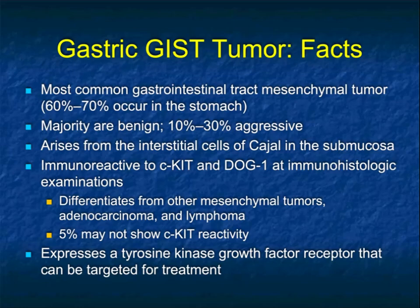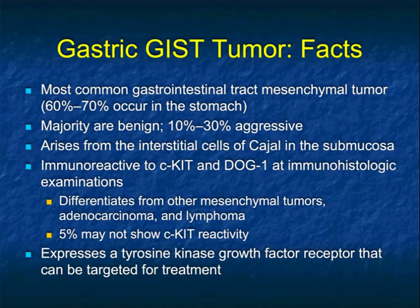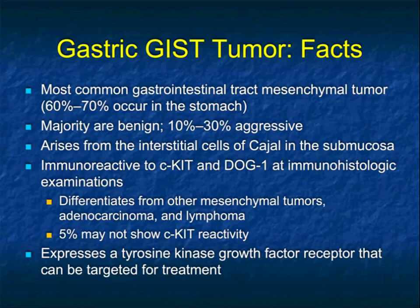Some basic facts: gastric GIST tumors are the most common GI tract mesenchymal tumor. Almost two-thirds occur in the stomach; they can also occur in the small bowel and anywhere from the esophagus to the anal region. The majority are benign, but about a third can be aggressive. They arise from the interstitial cells of Cajal and the submucosa. They are immunoreactive to CKIT and DOG-1 on immunohistologic examination, which helps differentiate them from other mesenchymal tumors. About 5% do not show CKIT reactivity.